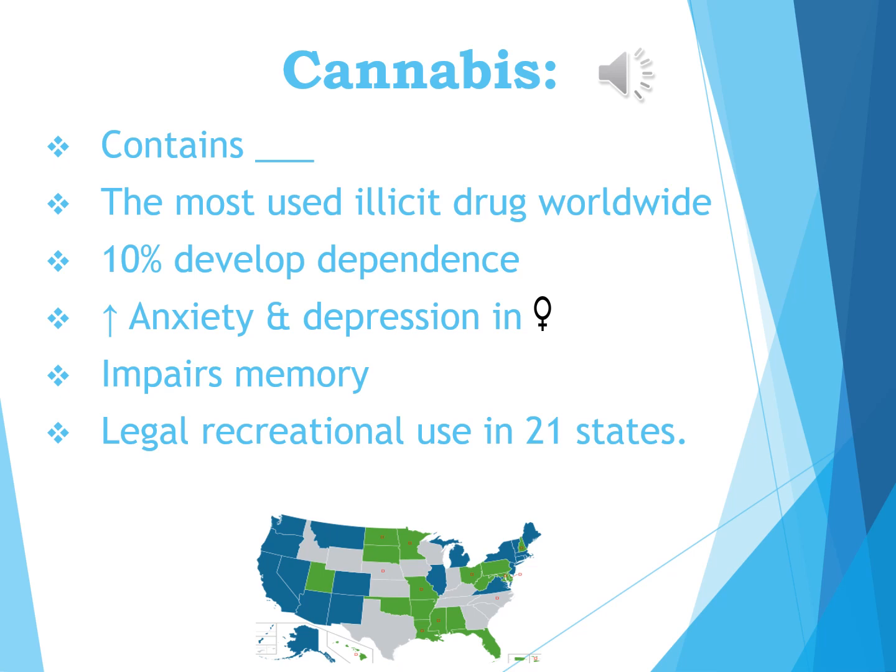Cannabis produces its high via the specific drug THC. Worldwide it's the most used illicit drug, though not illegal everywhere. About 10% of users will develop dependence. In women it may cause anxiety and/or depression. While using it, memory is often impaired. The map below reflects states which allow recreational use — shown in blue — while green states allow medical use only.